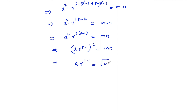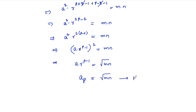Since a · r^(p-1) is the p-th term of the GP, we conclude that a_p = √(mn). Therefore, the p-th term of the GP is the square root of mn.